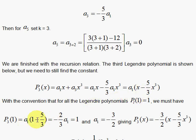a sub 1 here times 1 minus 5 thirds is equal to minus 2 thirds a1 has to be 1, a1 has to be minus 3 halves. So that means the third, the Legendre polynomial, has to be minus 3 halves, that's the a1, times whatever we have here, x times, it would be x minus 5 thirds x cubed.